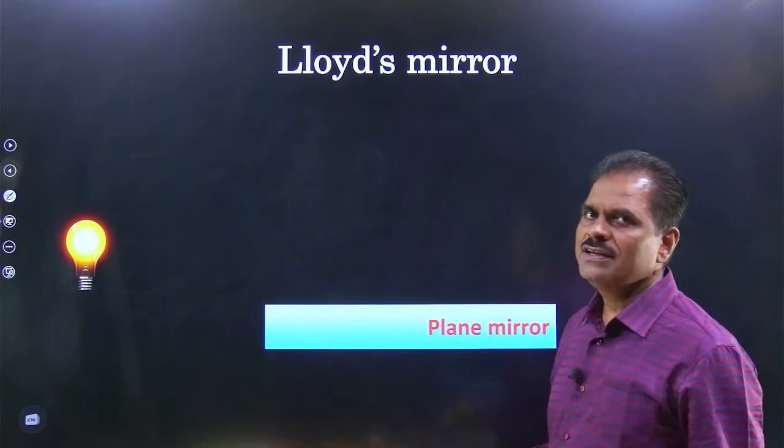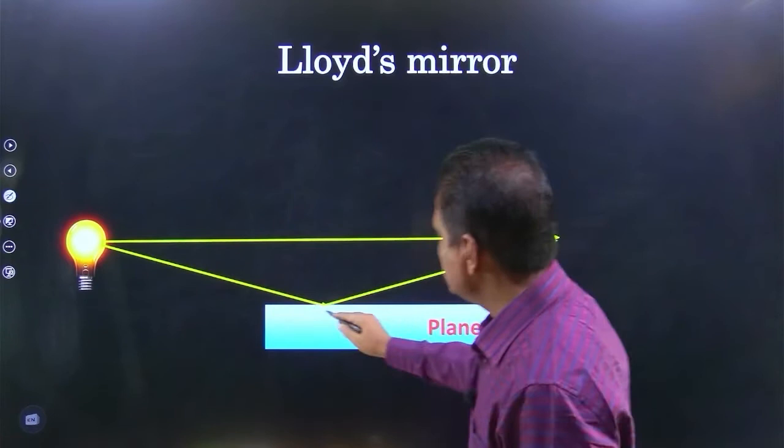So look at this. This is the ray coming direct and this is the ray after reflection. Is there any path difference?